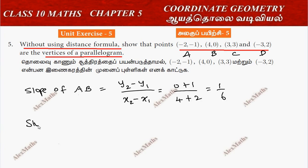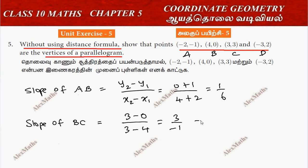Next, the slope of BC. This is 3 minus 0 by 3 minus 4, which totals 3 by minus 1, which is minus 3.